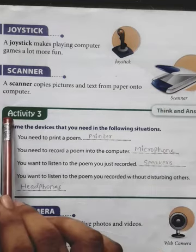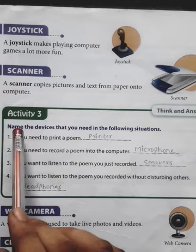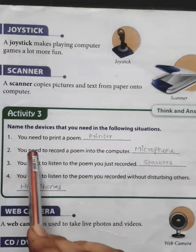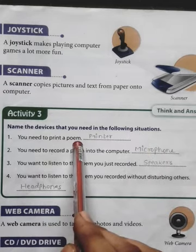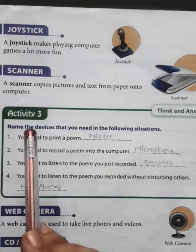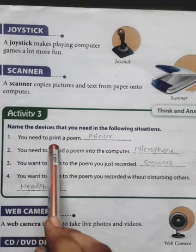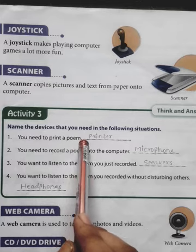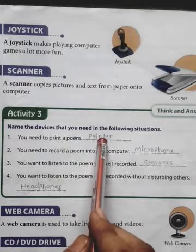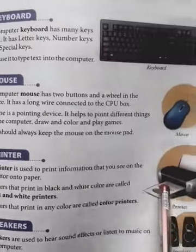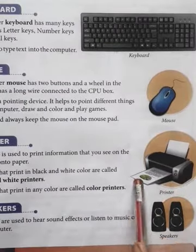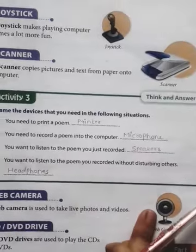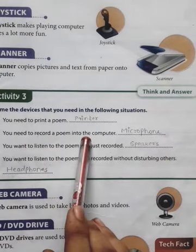Okay, now Activity 3 — let's see what it is. Name the devices that you need in the following situations. First one: you need to print a poem. You have typed the poem in Microsoft Word or any software, and now if you want that poem on paper, you will print it. Which device do you use? You use a printer. You might have seen this printer in school — yes, correct.